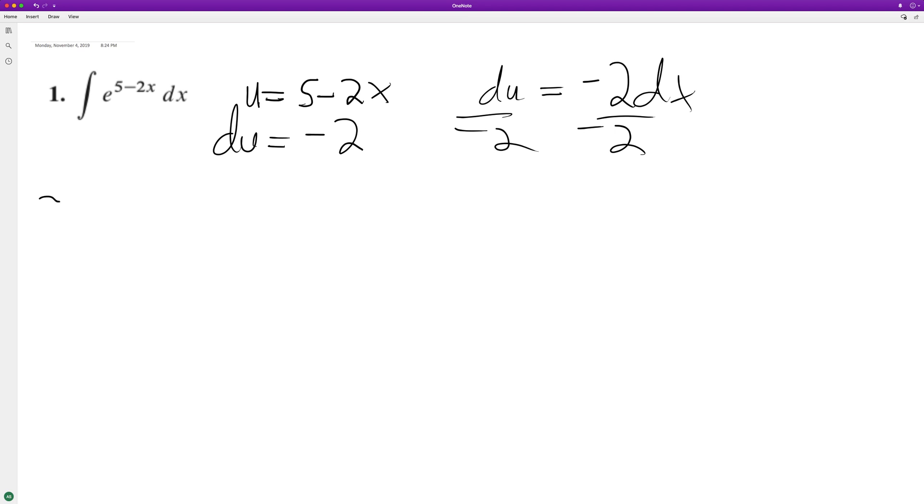So pull the negative 1 half out here. E raised to the u, du, because we put that in place of dx, since dx equals negative 1 half du.